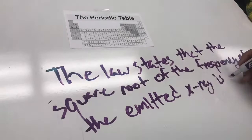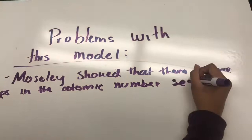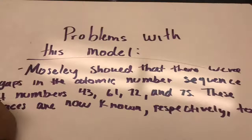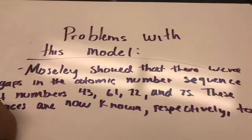The problem with this model was that it showed there were gaps in the atomic number sequence at 43, 61, 72, and 75. These spaces are now known to be the places of radioactive synthetic elements,